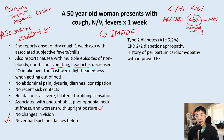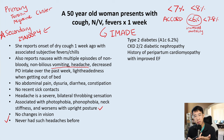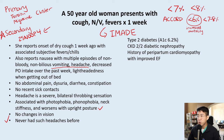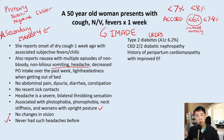Another question attendings may ask is: does good control of diabetes affect microvascular outcomes, macrovascular outcomes, or both? Microvascular outcomes include peripheral neuropathy, retinopathy, and nephropathy. Macrovascular outcomes include heart attacks and stroke. The UKPDS trial showed that good control of diabetes only improves microvascular outcomes and does not actually reduce your risk of heart attacks or strokes. So even with well-controlled diabetes, patients remain at increased risk of stroke and heart attack.